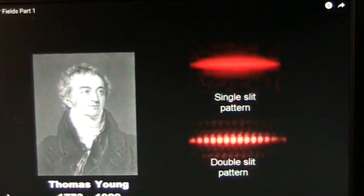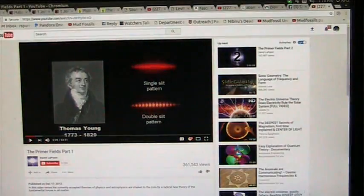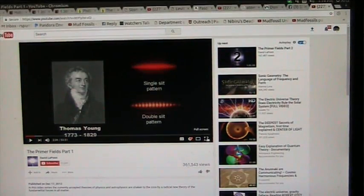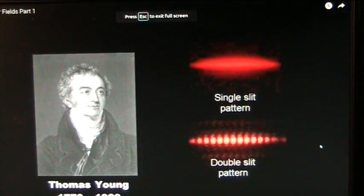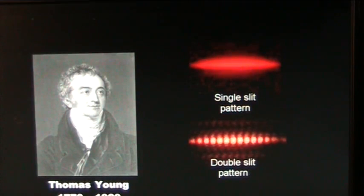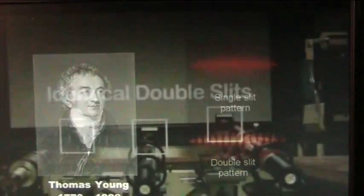This is on YouTube and this is by David LaPointe, The Primer Feels Part 1. I am going to talk about this. This is Thomas Young and he did the double slit experiment and we have done the same experiment, Rodney Warren and I, and I'm going to discuss that in a second. Thomas Young demonstrated the wave-like nature of light in 1803 with his famed double slit experiment. Ever since then, the world's top minds have debated what the results of this experiment actually mean.